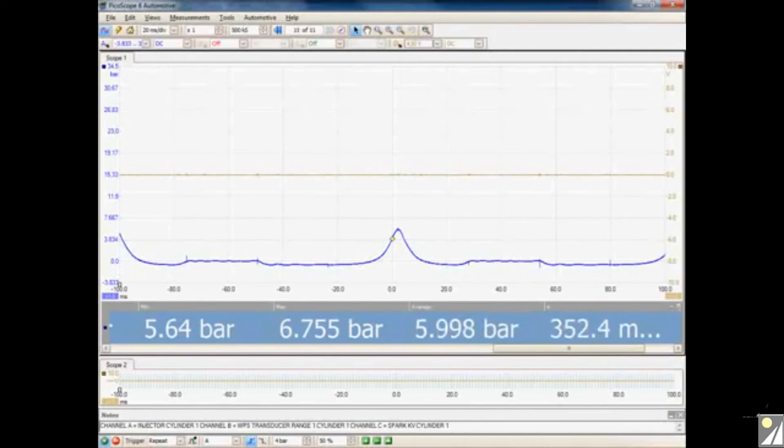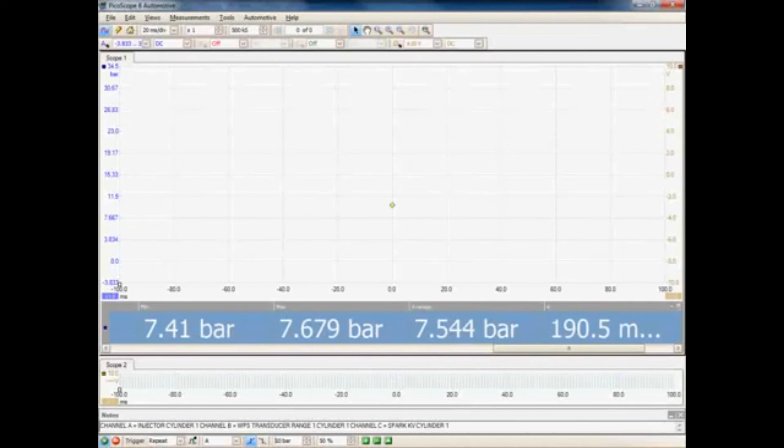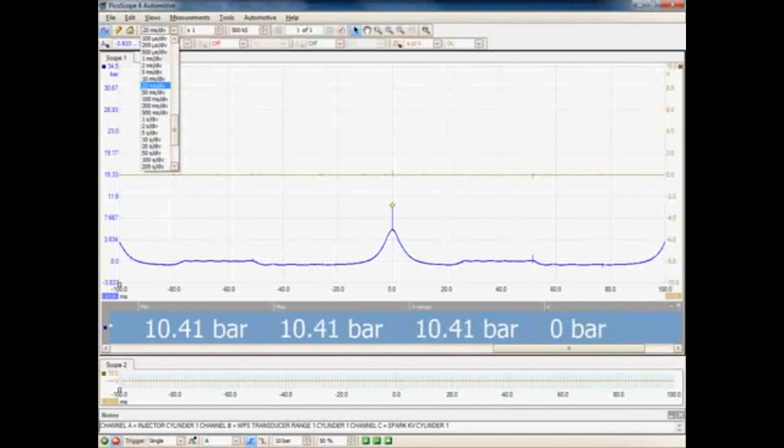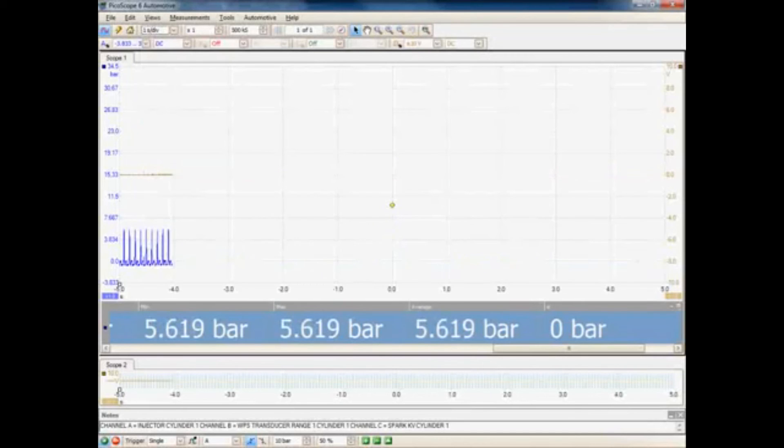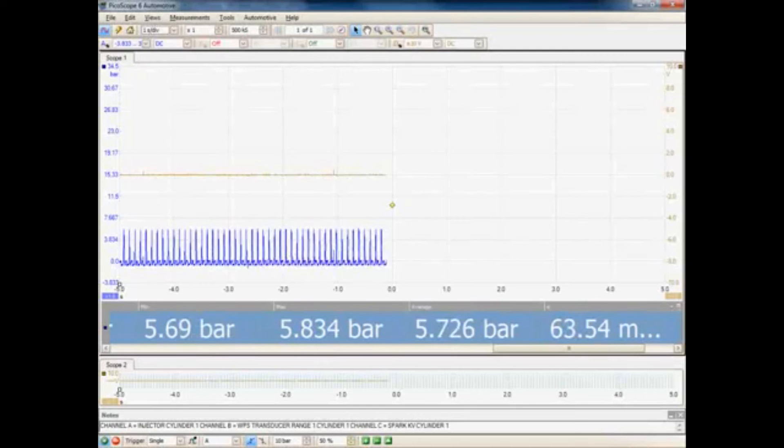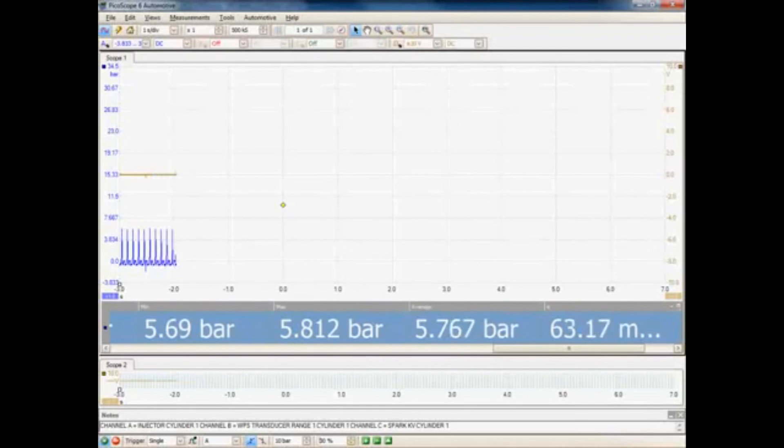What I'm going to do now is I'm going to change my trigger. So I'm going to move the trigger threshold up to 10 bar. As you can see now we're not triggering on anything. I'm going to change this to single capture and I'm also going to change the time base now to a much longer time base so we're streaming. I'm going to go for one second across the screen. You can see now that we're streaming. I'm just going to bring the trigger over to 30% so we can capture the whole event on the screen.